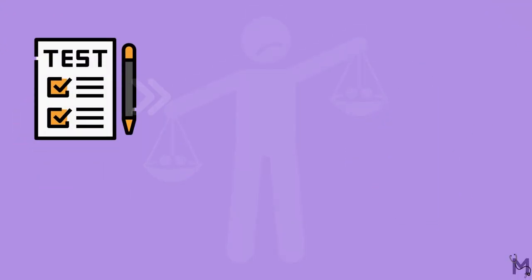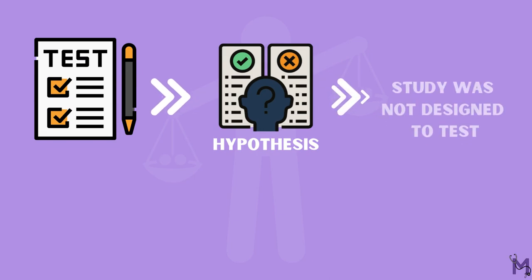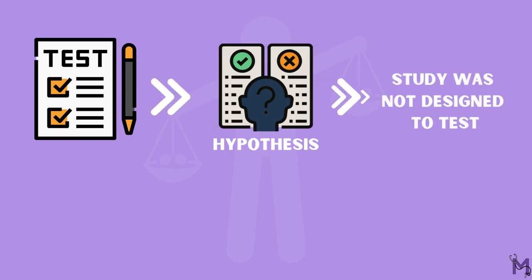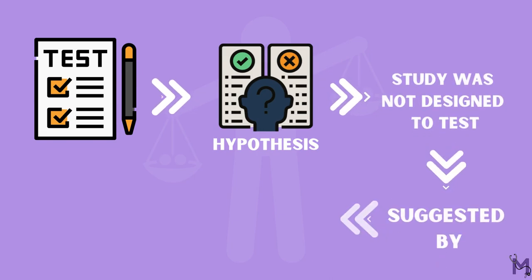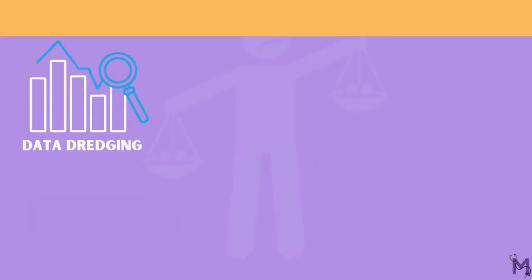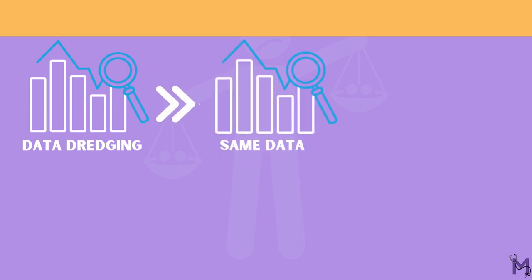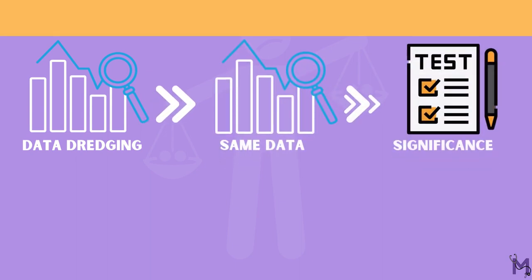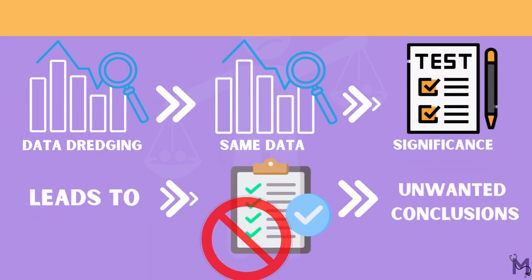Lastly, in case we test a hypothesis that the study was not designed to test but is suggested by the data, this is known as data dredging. Finding an association through data dredging and then using the same data to test its significance may lead to unwanted conclusions, and this is known as post-hoc bias.